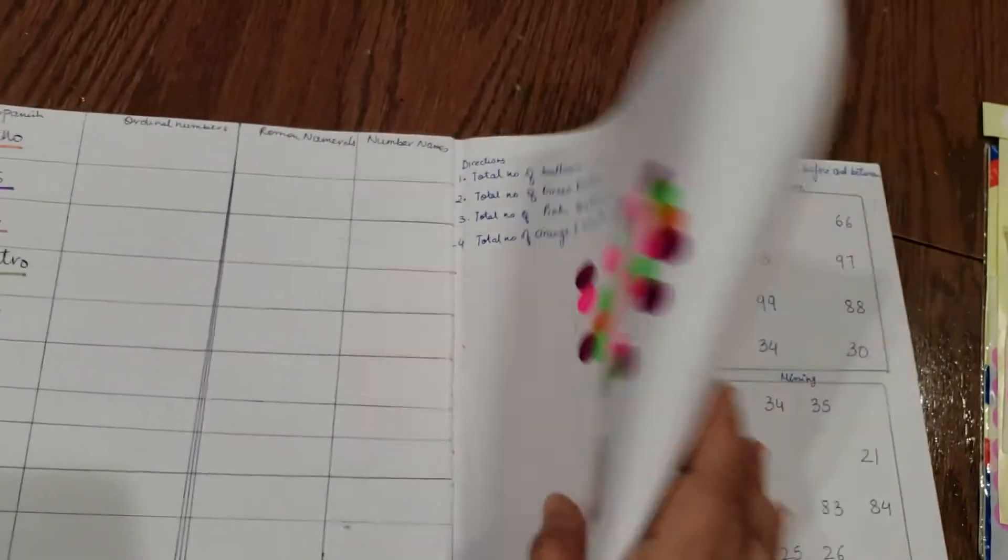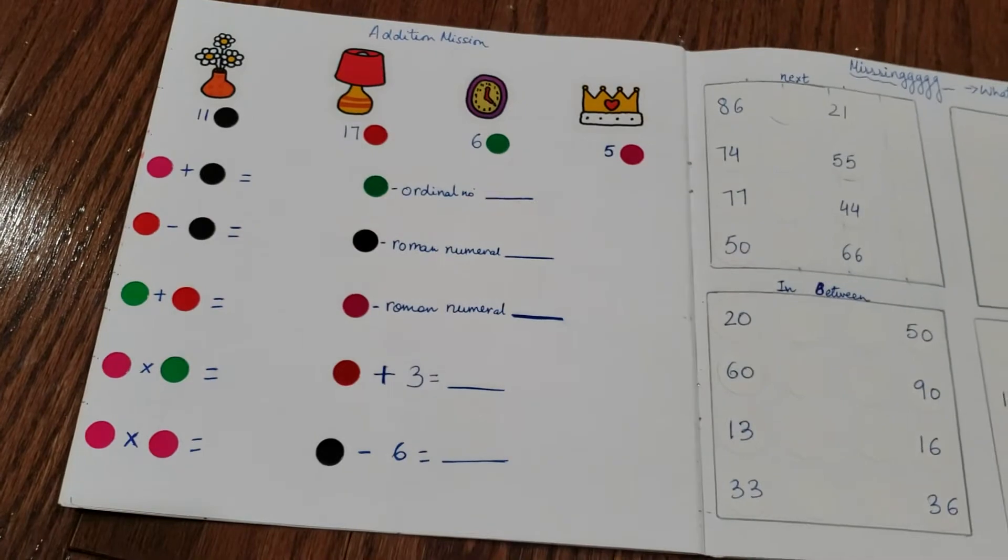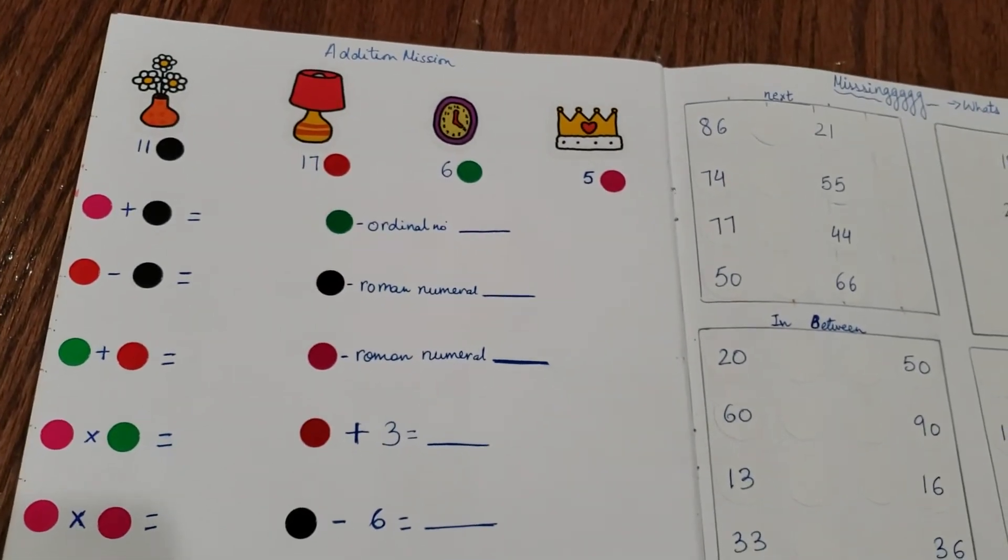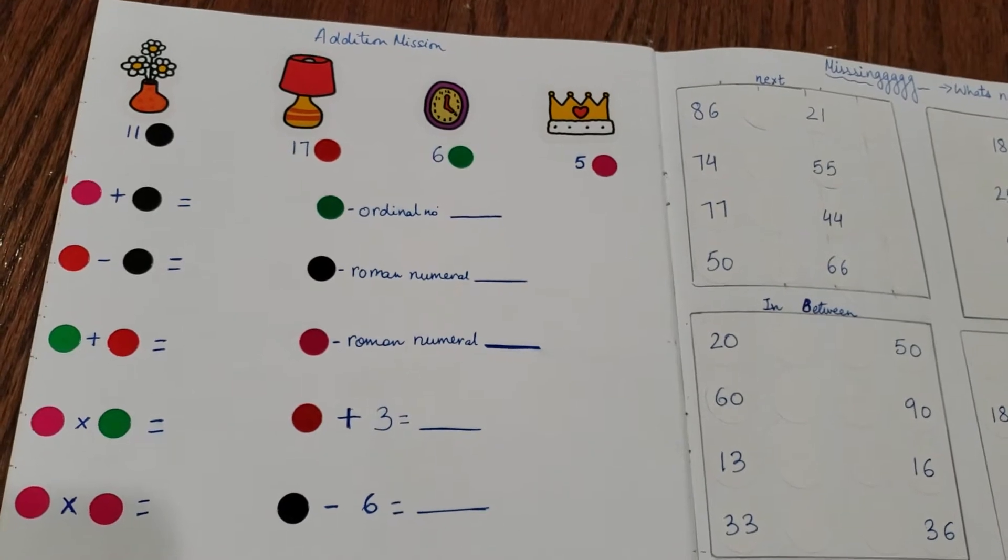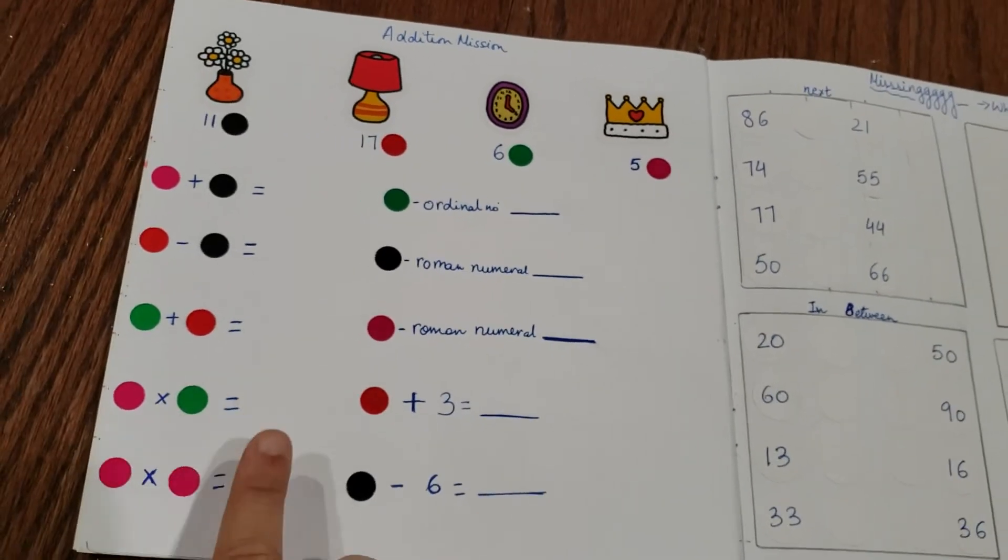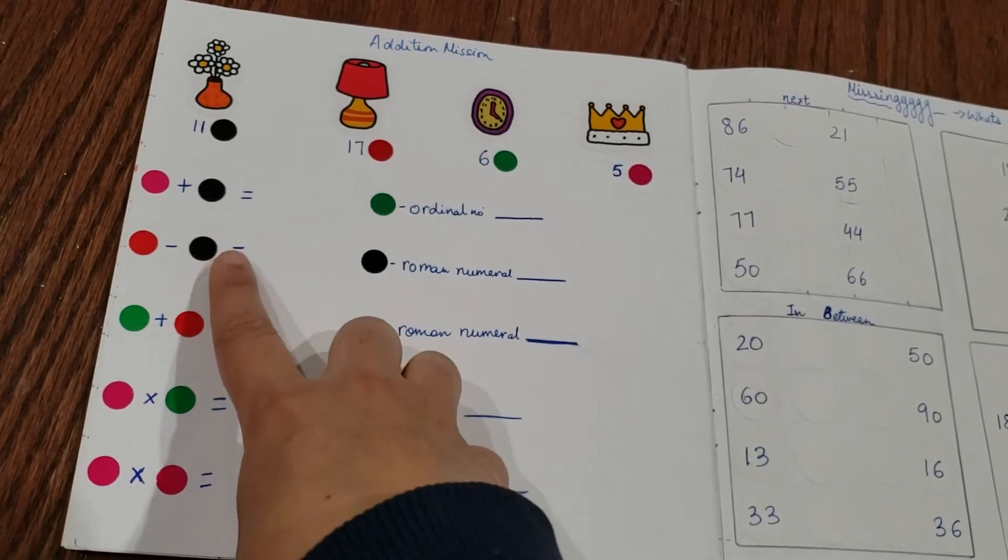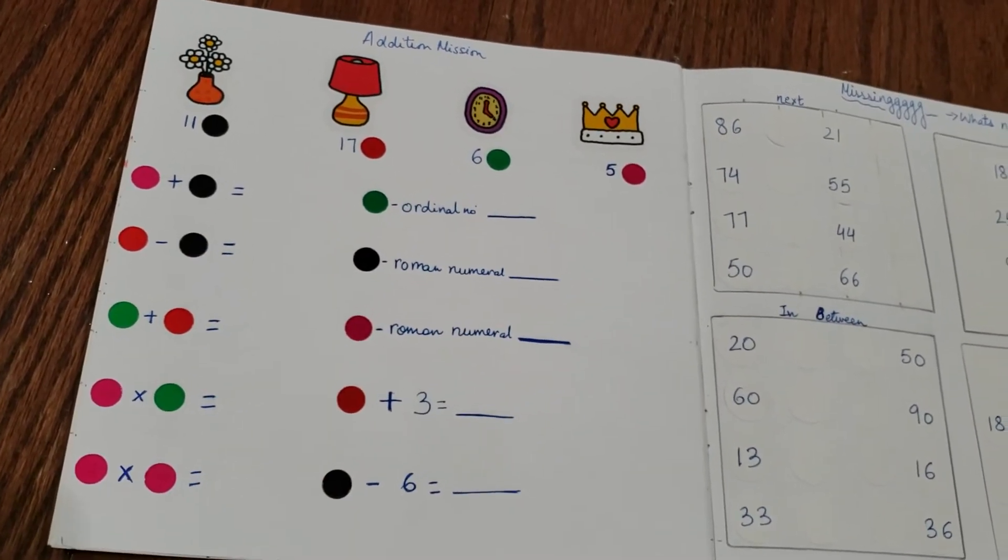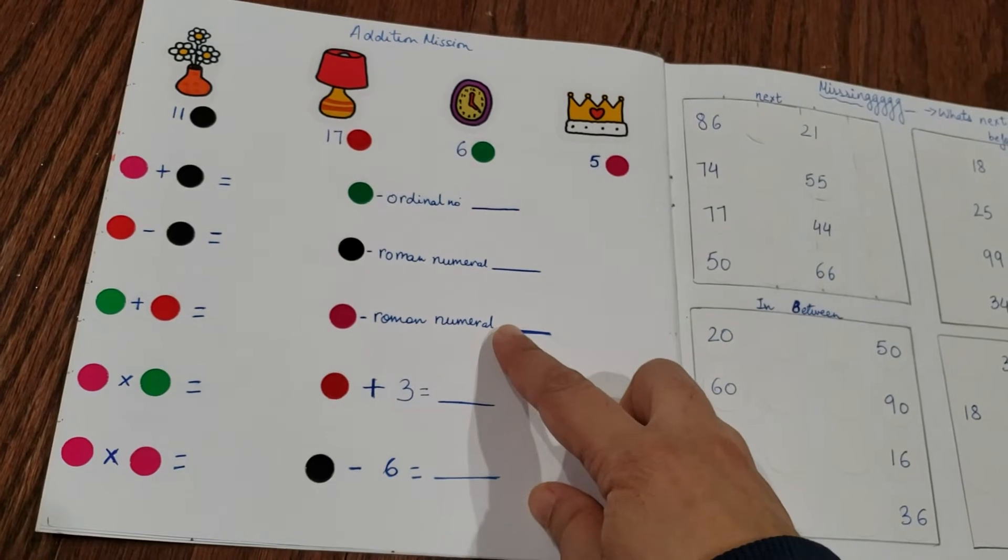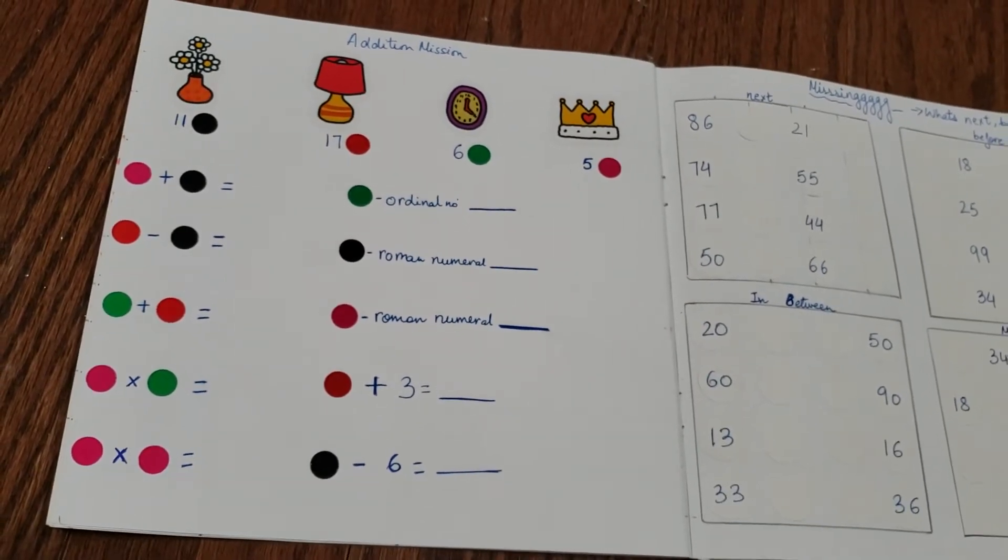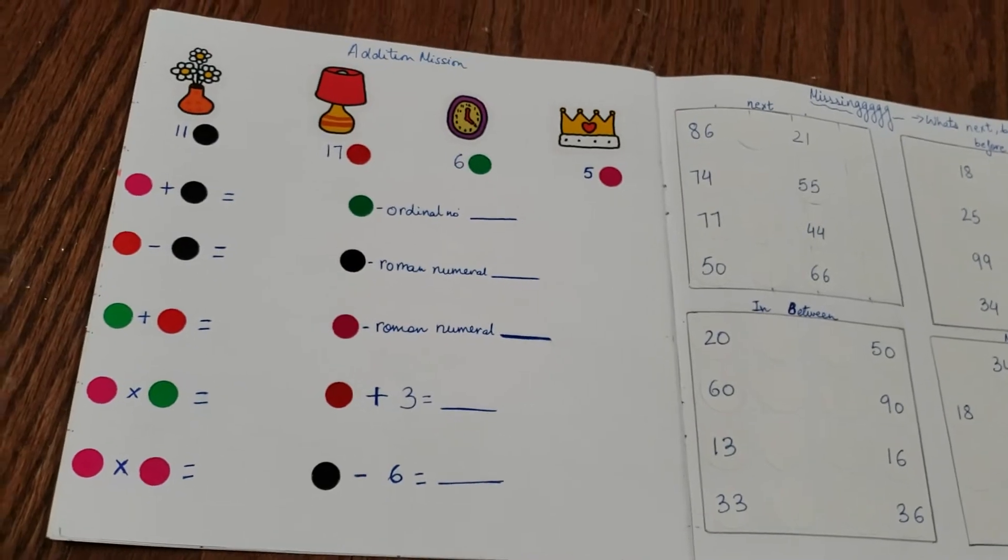You have an addition mission - four objects at the top, and each object has been coded with a number and a color. It's not just addition - in the meanwhile I've given him subtraction and multiplication too. I've asked him to write Roman numerals and ordinal numbers. I should have changed that to just 'mission' and not 'addition mission' - point noted, I'm going to correct that.